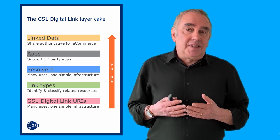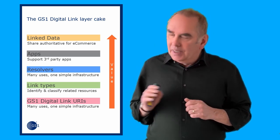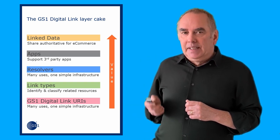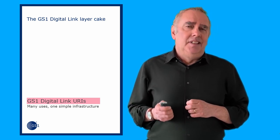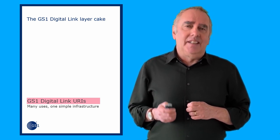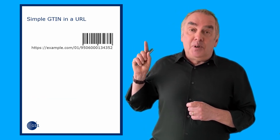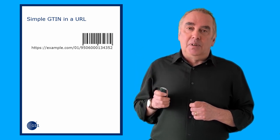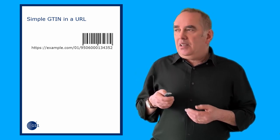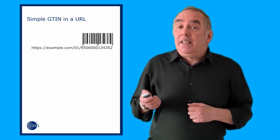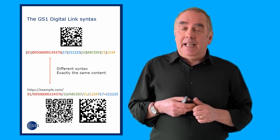If we try and cover the whole of Digital Link there's just so much of it and it quickly blows people's minds. So we're going to take it one layer at a time. Let's start with the foundation — we call this the GS1 Digital Link URI syntax. All that means is there's a very definite structure to the way that you put the identifier into a URL. This is a simple case for the GTIN; it could be a serialized shipping code, it could be a GLN, whatever it may be.